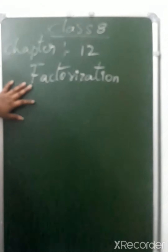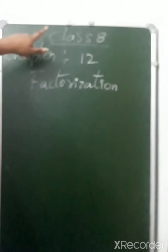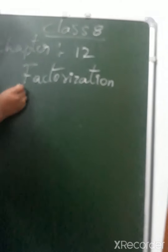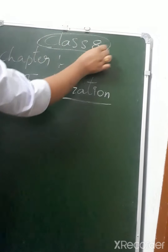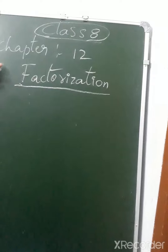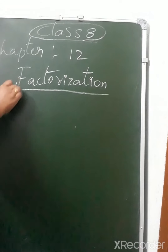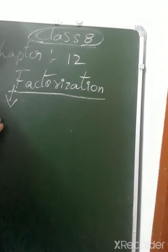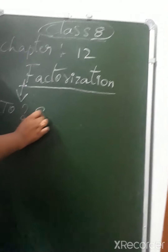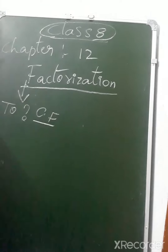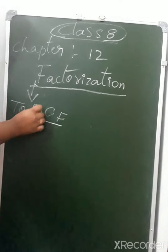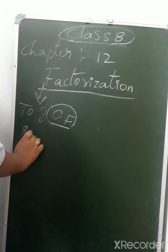Today we are discussing the factorization topic of Chapter 12. Our topic is factorization, related to Class 8, Chapter 12. Factorization means finding common factors. So how do we find common factors? Let's see this by one of the examples.